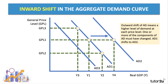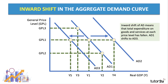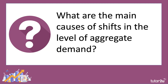Equally, there could also be an inward shift in AD. AD1 to AD3 is described as an inward shift of demand, meaning there's been a fall in the level of goods and services bought at each general price level. So what are the main causes of shifts in the level of AD — the position of the aggregate demand curve?